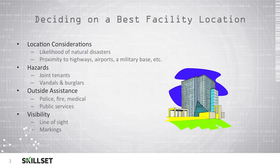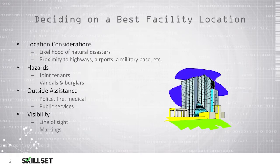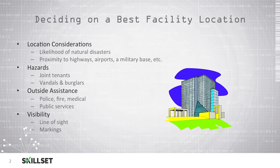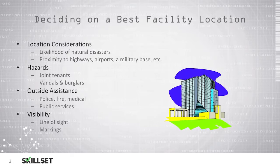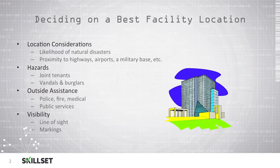What type of hazards do you have in this location? Joint tenants could be a problem because they have access to the building and may be able to access your space without your knowledge. You could also have vandalism and burglaries if you are in a high crime area. You want to make sure that you're close to outside assistance like police, fire, and ambulance services and other public services that you may need to access.